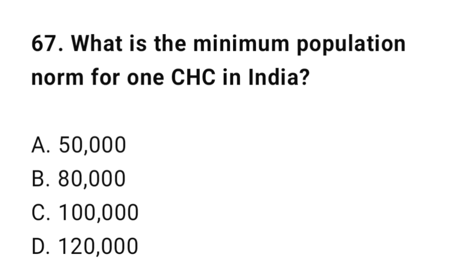Question number sixty-seven: What is the minimum population norm for one CHC in India? The correct option is C: 100,000.